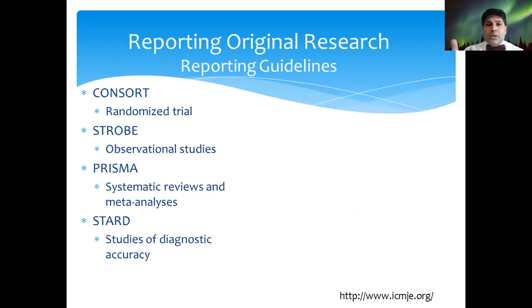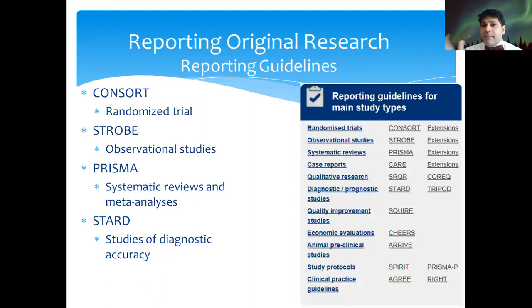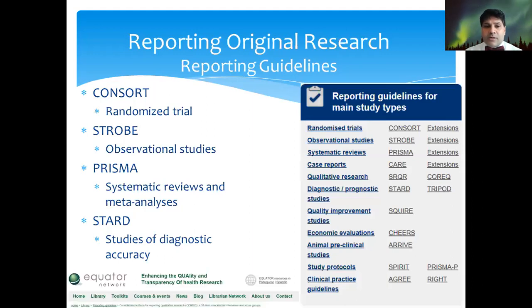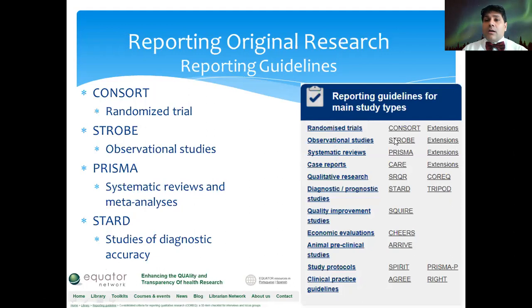Just to clarify: STROBE statement is for observational studies, CONSORT is for randomized control trials, PRISMA is for systematic reviews, and STARD is for diagnostic accuracy. There's a website called the Equator Network — you can find it at the bottom of the slide. It gives you all the checklists for each different type of study. You can click, download the Word file, keep it with you, and start writing your manuscript one section at a time.